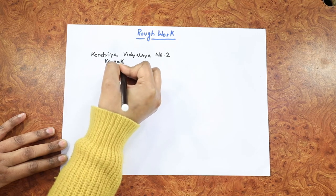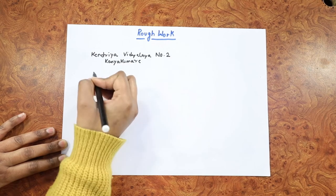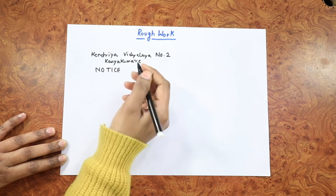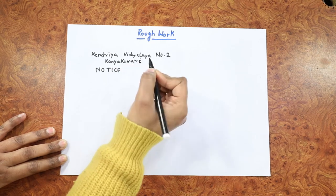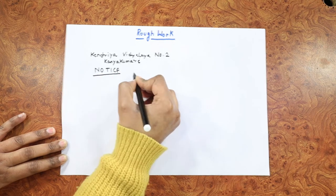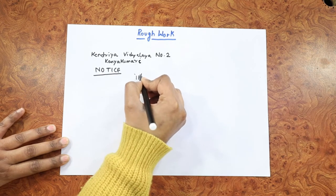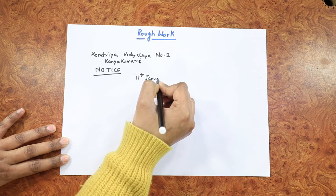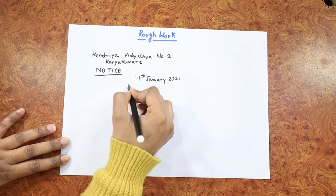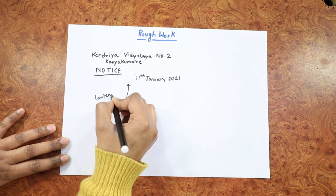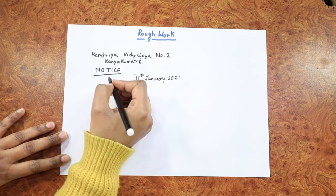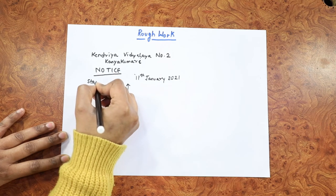I can write down the place and where the school is. Then I will write 'NOTICE' and the date. Then the content — the event heading. Oh yes, I forgot about that. For the event heading I can write 'Staging the play Shakuntalam.'